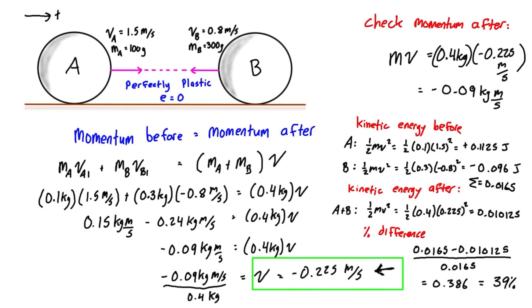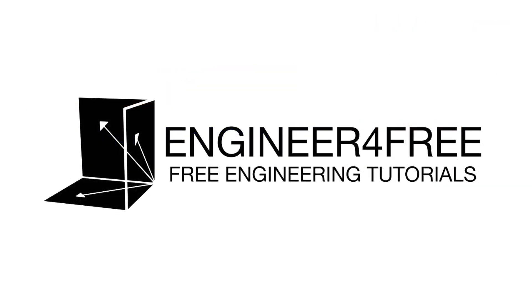You can round that to 39%. We've actually lost 39% of the kinetic energy in this plastic collision. Momentum is conserved completely, and for a perfectly plastic collision, the maximum amount of energy is lost.